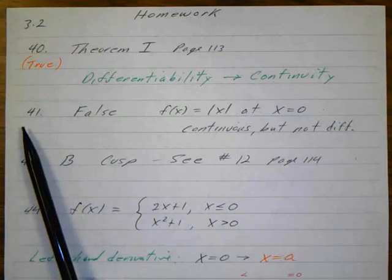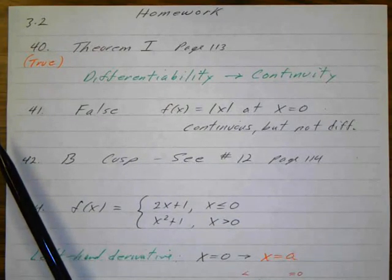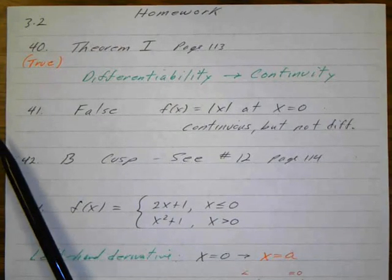Number 41 says if f is continuous at x equals a, then f has a derivative at x equals a. Justify your answer.